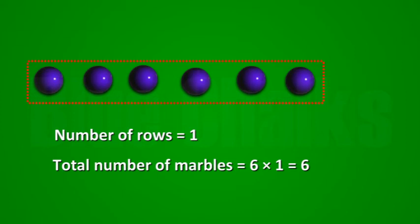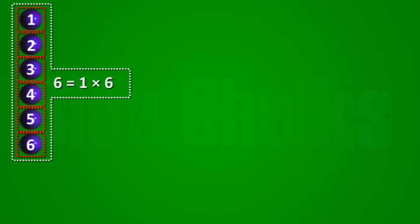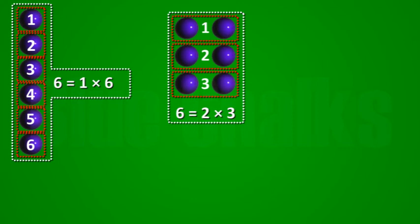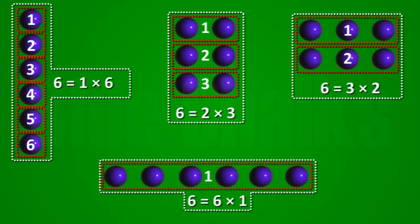From these calculations, you will observe that six can be written as a product of two numbers in different ways. From six is equal to two into three, it can be said that two and three exactly divide six. So, two and three are exact divisors of six.